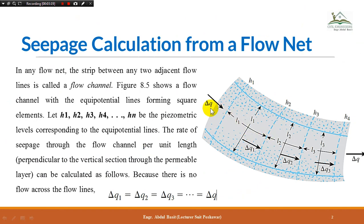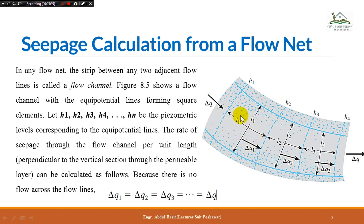In the magnified view, this is one flow line and this is the other flow line. You can see the first, second, third, and fourth equipotential lines. Between these two flow lines this space is called the flow channel. The rectangle or square formed between the equipotential lines and the flow lines is called the flow element. We consider that this flow element is completely square.